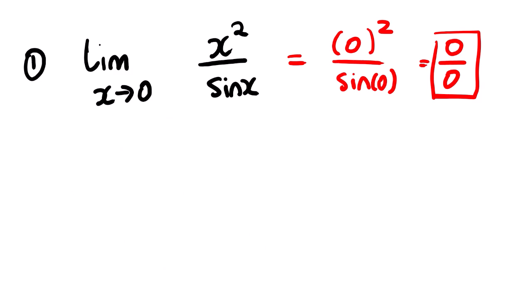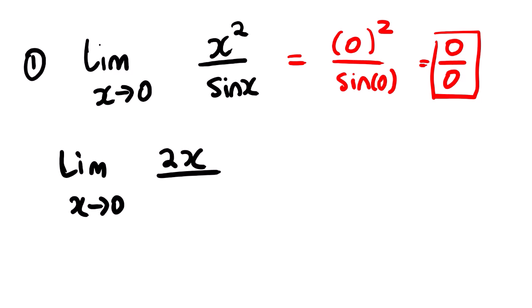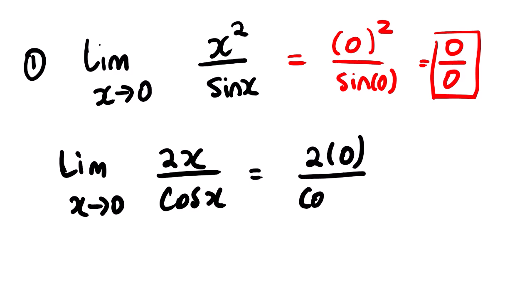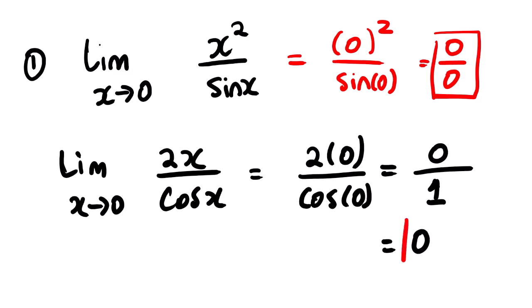So let us find the derivative of these functions. The limit as x approaches 0: the derivative of x² is 2x, over the derivative of sine x which is cos x. From here we substitute: we have 2(0) over cos(0). This gives 0 over 1, which equals 0. So the limit of this function as x approaches 0 is 0.